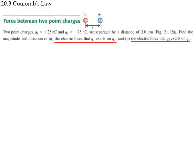Let's calculate a detailed example. q1 = 25 nC, q2 = –75 nC (nano = 10⁻⁹), separated by r = 3 cm. Part (a): find the magnitude and direction of the force q2 exerts on q1. Part (b): the force q1 exerts on q2. Since opposite charges attract, q1 feels a force pointing toward q2 (to the left), and q2 feels a force pointing toward q1 (to the right).